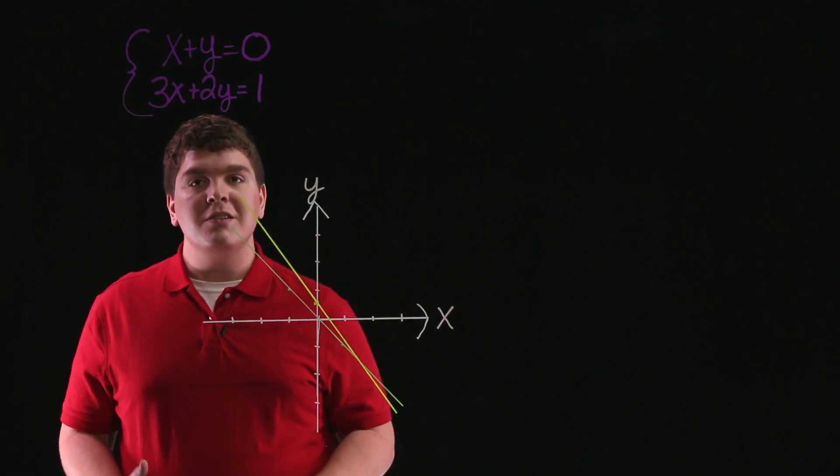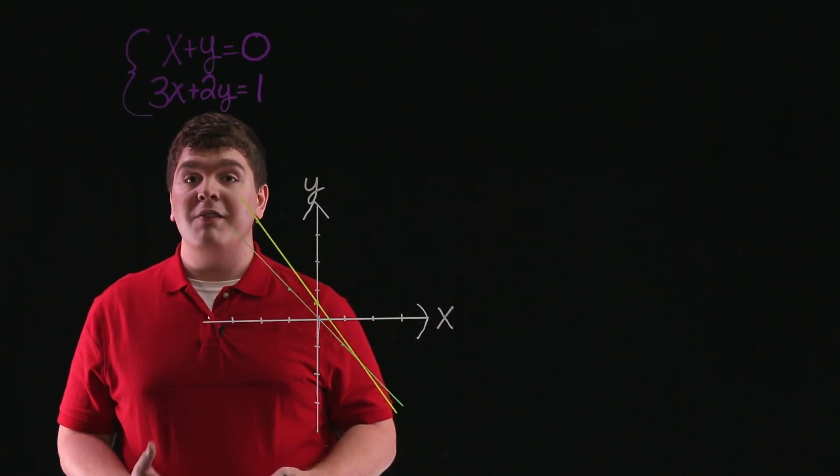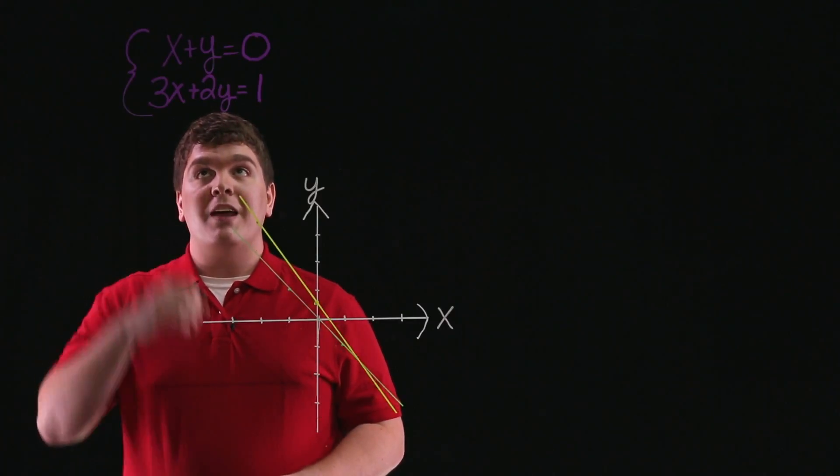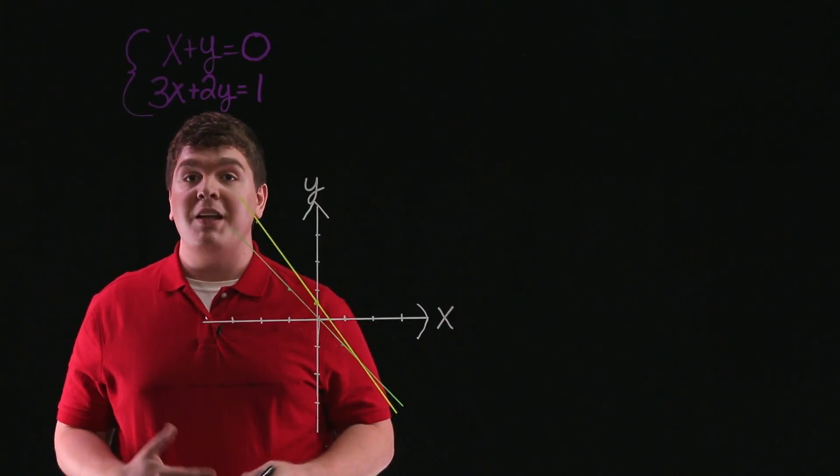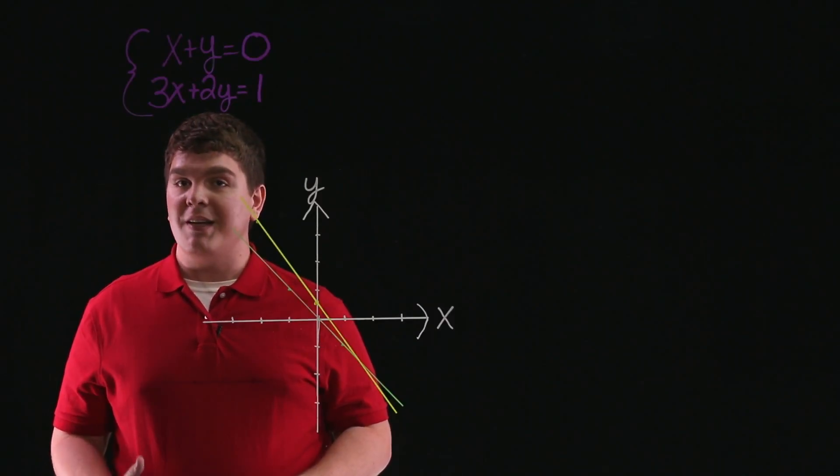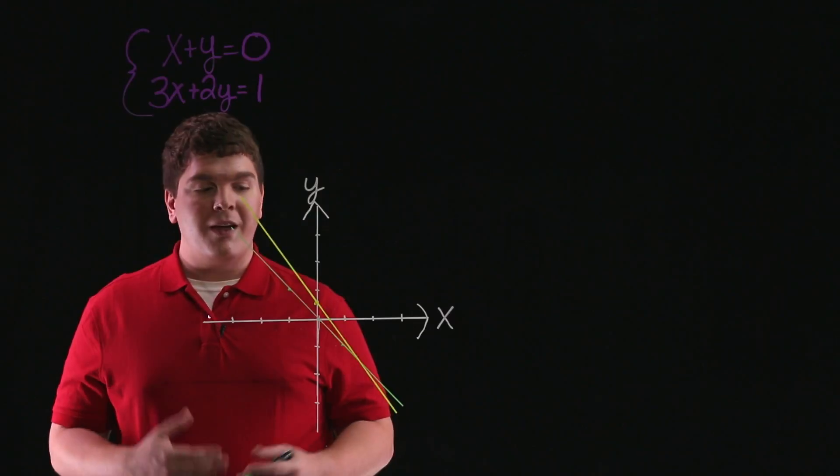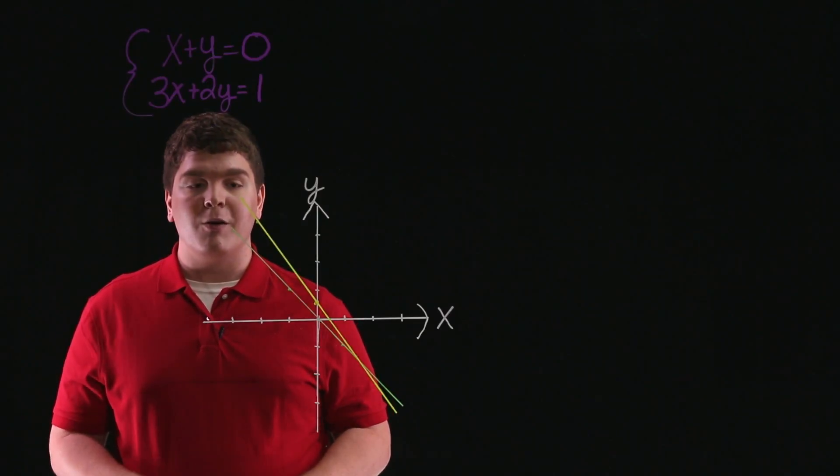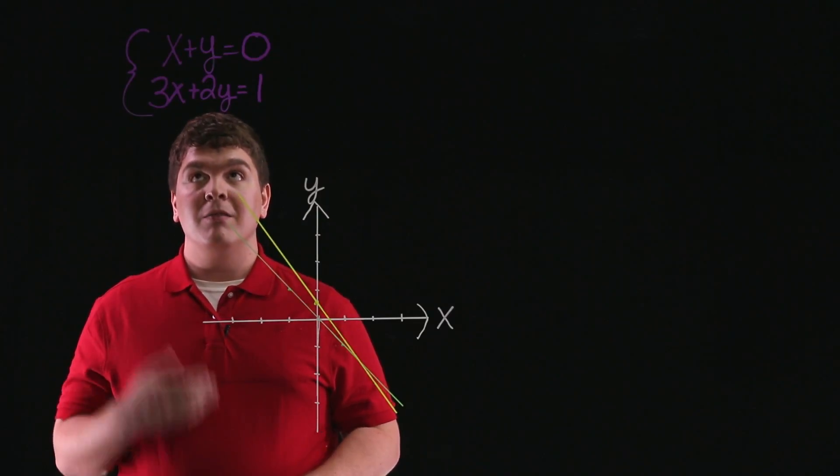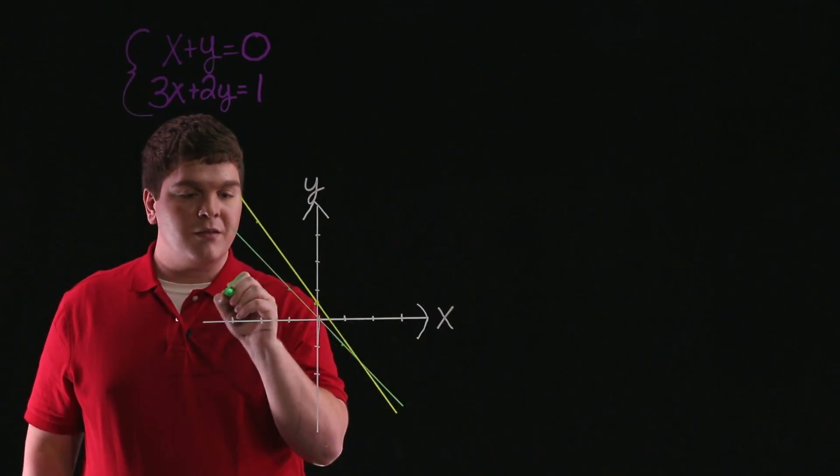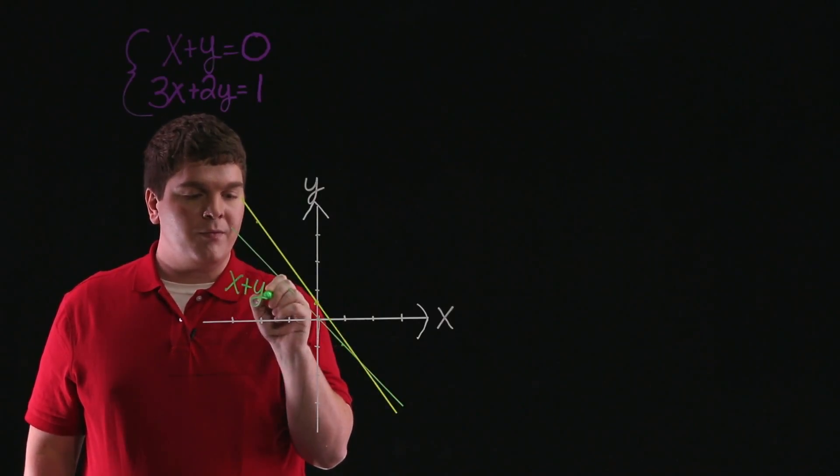Let's begin by first considering the y-intercepts of each of these lines. If we look at the line x plus y equals 0, and we look for the y-intercept by setting x equal to 0, we see that the y-intercept happens when y is equal to 0. So this green line here is the line x plus y equals 0.